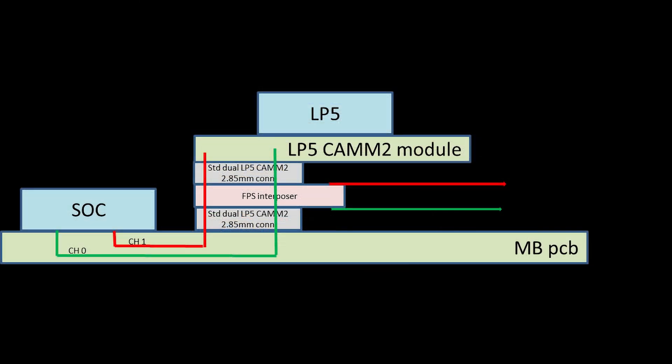This is a block diagram of the interposer makeup. On the very bottom is the motherboard PCB, labeled MBPCB. Contacting the motherboard is the signal pass-through connector, modified by Future Plus, which passes all signals to the interposer. The interposer probes the command and address signals, routes them to the cables, and then on to the logic analyzer. The interposer passes all signals to a second modified signal pass-through connector and then on to the CAM2 module.